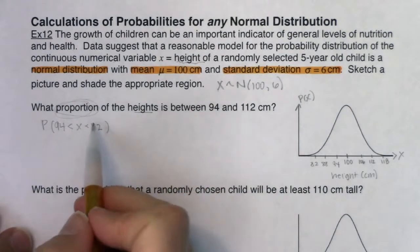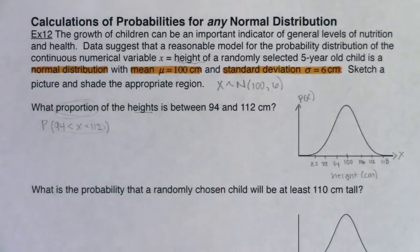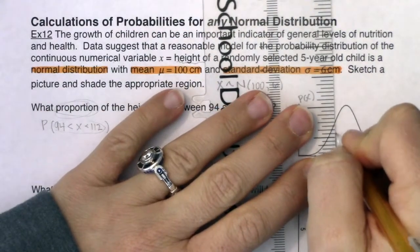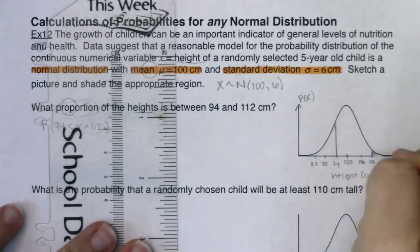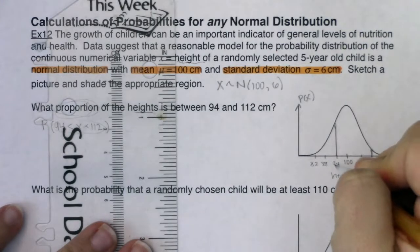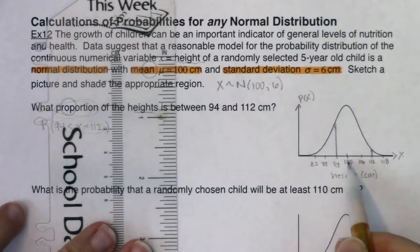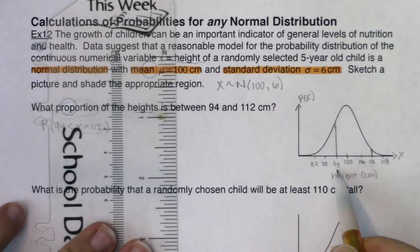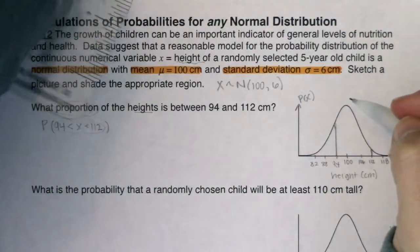Starting from the inside and working out, I want to go from an x value of 94 to an x value of 112. In this example these fall on integer z-score values: 94 is a z-score of negative one — one deviation below the mean — and 112 is a z-score of positive two. So I'm going from z = -1 to z = +2. Let me shade that area under the curve.